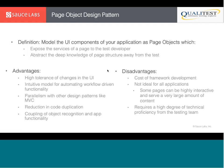Page Objects within Page Objects — for instance, a message list containing message Page Objects — works well. However it's not ideal when pages are highly interactive and serve a large amount of content. Another disadvantage is that it requires a high degree of technical proficiency from the testing team. The team needs to know how to write good Page Objects and maintain them, otherwise you'll have a mess that hurts you in the long run.